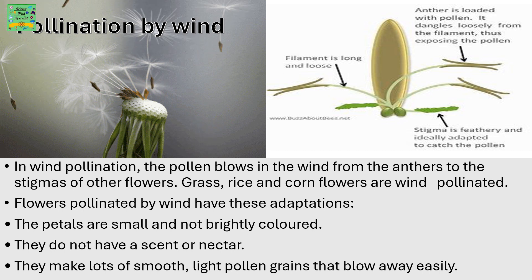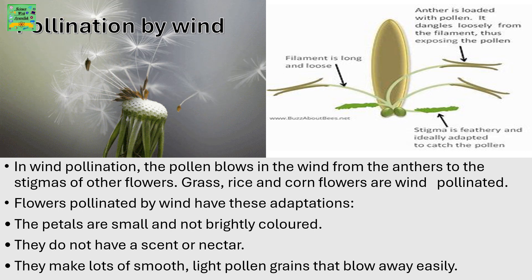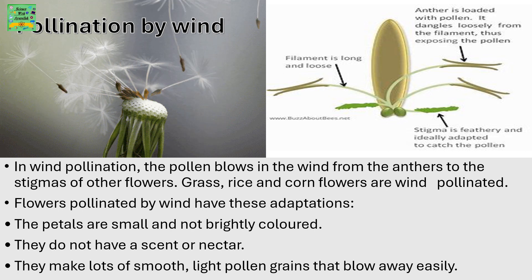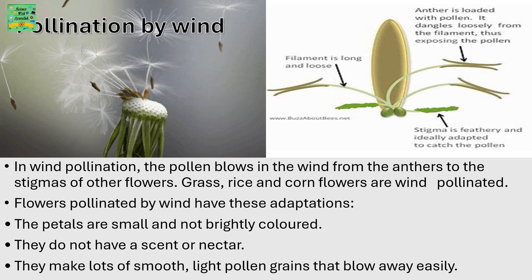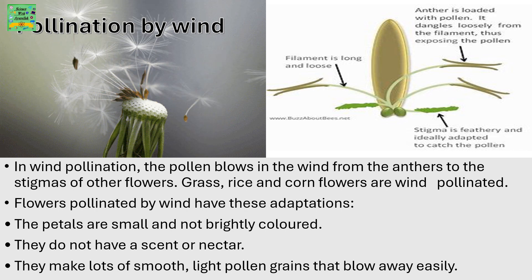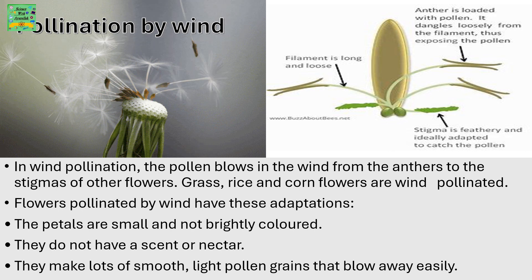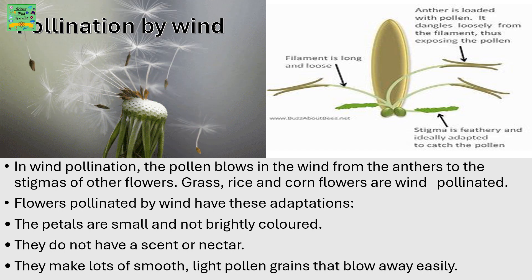Pollination by wind. In wind pollination, the pollen grains blow in the wind from the anthers to the stigma of the other flowers. Grass, rice, and corn flowers are wind pollinated.